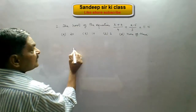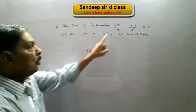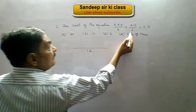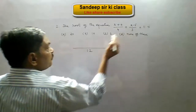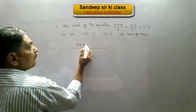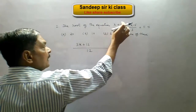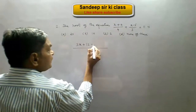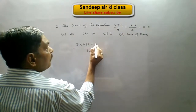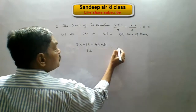When we solve this equation, we find that 12 is the LCM — that is 4 into 3 on the left hand side. 3 will be multiplied with x plus 4, so in the numerator we get 3x plus 12. Then 4 will be multiplied by x minus 5, giving us 4x minus 20.